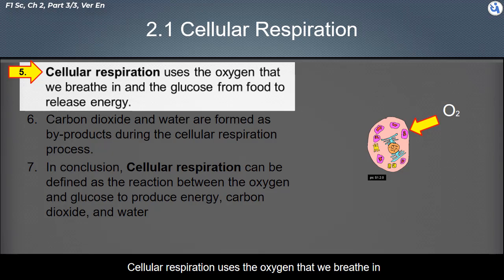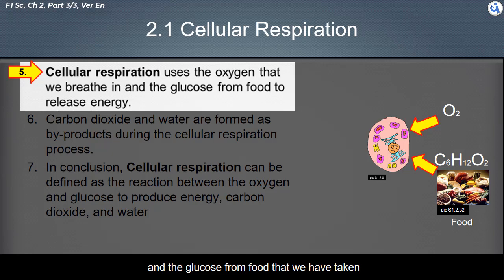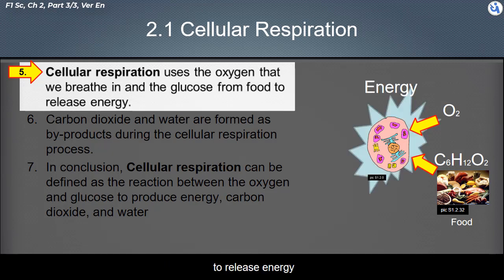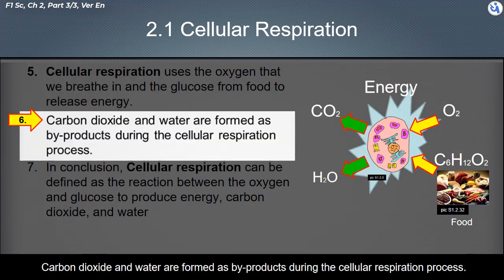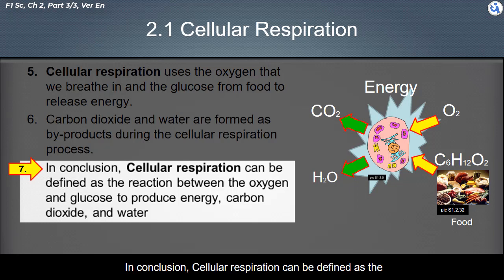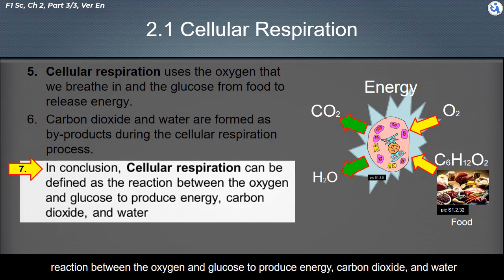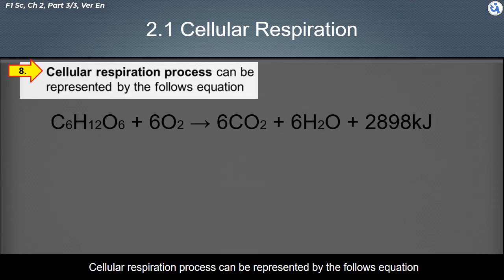Cellular respiration uses the oxygen that we breathe in and glucose from food to release energy. Carbon dioxide and water are formed as byproducts. In conclusion, cellular respiration can be defined as the reaction between oxygen and glucose to produce energy, carbon dioxide, and water. The cellular respiration process can be represented by the following equation.